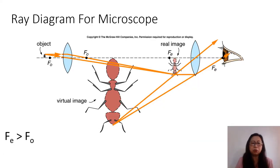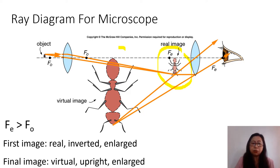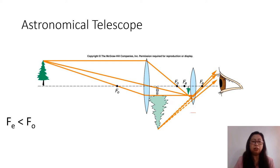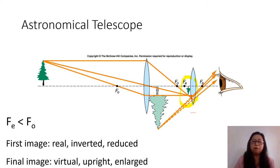For a microscope, the focal length of the eyepiece is greater than the focal length of the objective lens. The first image is a real, inverted, and enlarged image of the object. This image becomes the object of the eyepiece lens, wherein the final image is a virtual, upright, and enlarged image. For a refracting telescope, the focal length of the eyepiece is less than the focal length of the objective lens. The first image is a real, inverted, and reduced image. This is then the object of the eyepiece lens, which produces a final image that is virtual, upright, and enlarged.